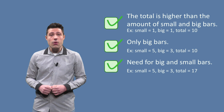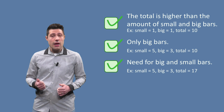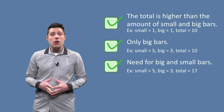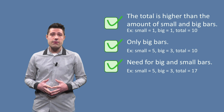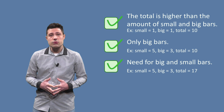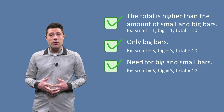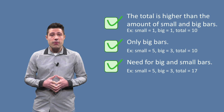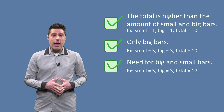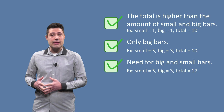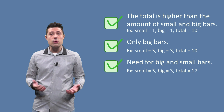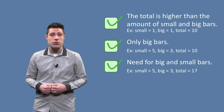Then we may need both big and small bars in the package. For example, for small equals 5, big equals 3, and total equals 17, we must use the three big bars we have and complement it with two small bars. Thus the program should return 2.